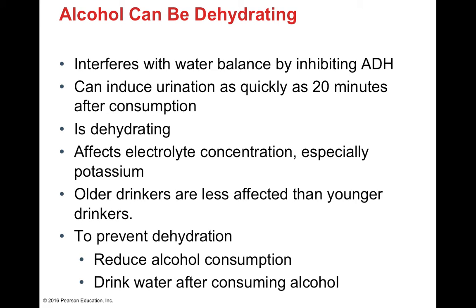Alcohol also inhibits antidiuretic hormone and can induce urination as quickly as 20 minutes after consumption, leading to dehydration. It also affects electrolyte concentrations, specifically potassium levels — so consuming a banana if drinking heavily can help. Older adults may be less affected than younger drinkers due to tolerance; with established drinking, the body compensates by producing additional ADH. To prevent dehydration, reduce alcohol consumption and alternate each alcoholic beverage with a full glass of water. This slows alcohol consumption and helps restore water balance.